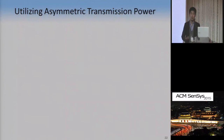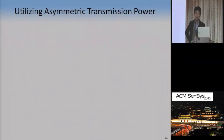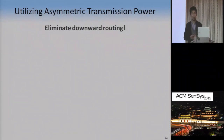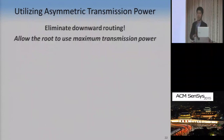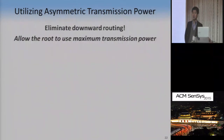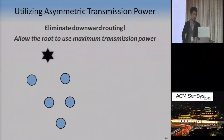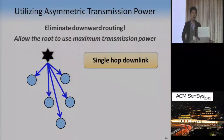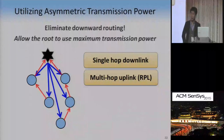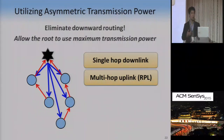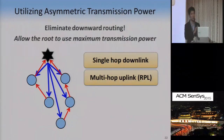The first attribute of MarketNet is utilizing asymmetric transmission power. Our approach to achieving reliable downward packet delivery was not to improve downward routing — instead, we decided to eliminate downward routing. Given that the root is typically a wall-powered device and free from energy consumption constraints, we allow the root to use much higher transmission power than low-power nodes. Using this capability, the root can transmit downward packets in a single hop. For uplink, we still use RPL to transmit uplink packets and maintain a low-power profile for nodes. So MarketNet provides single-hop downlink and multi-hop uplink transmissions using asymmetric transmission power and RPL together.